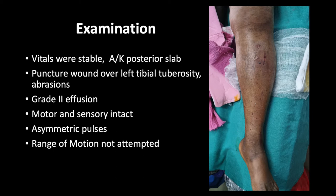On examination, the vitals were stable. There was an above-knee posterior slab in situ, which we removed for examination. There was a puncture wound less than one centimeter over the left tibial tuberosity with surrounding abrasion, and great effusion of the knee joint. Motor and sensation were intact; however, there were asymmetric pulses — the dorsalis pedis were not palpable on both limbs. Range of motion was not attempted because of pain. Our prime concern was the vascular status. What are your thoughts regarding this case with the information so far?